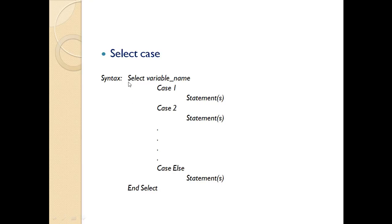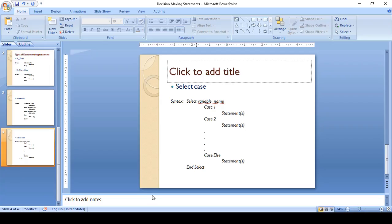For the Select Case syntax: write 'Select', then write the name of the variable to check. Then the number of cases will be written. According to the cases the statements will be executed. If all cases are false, the 'Case Else' is used, working like an Else statement. The Select Case is ended by using the keyword 'End Select'. Now I would like to show you how the programs will be executed in VB.NET using these decision making statements.